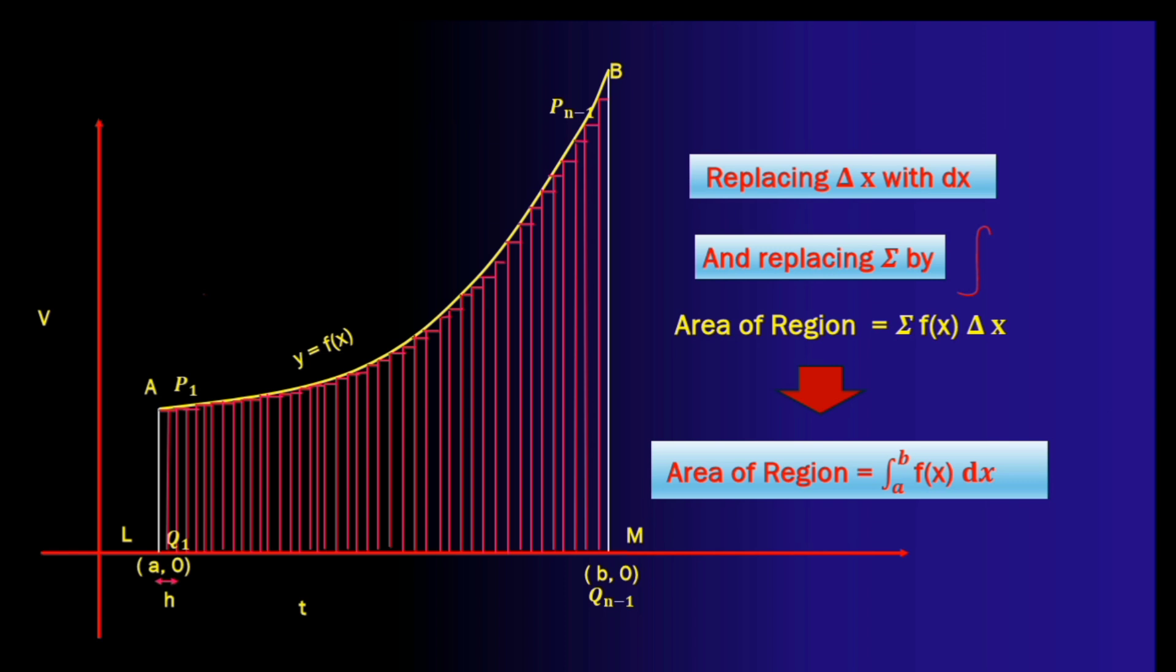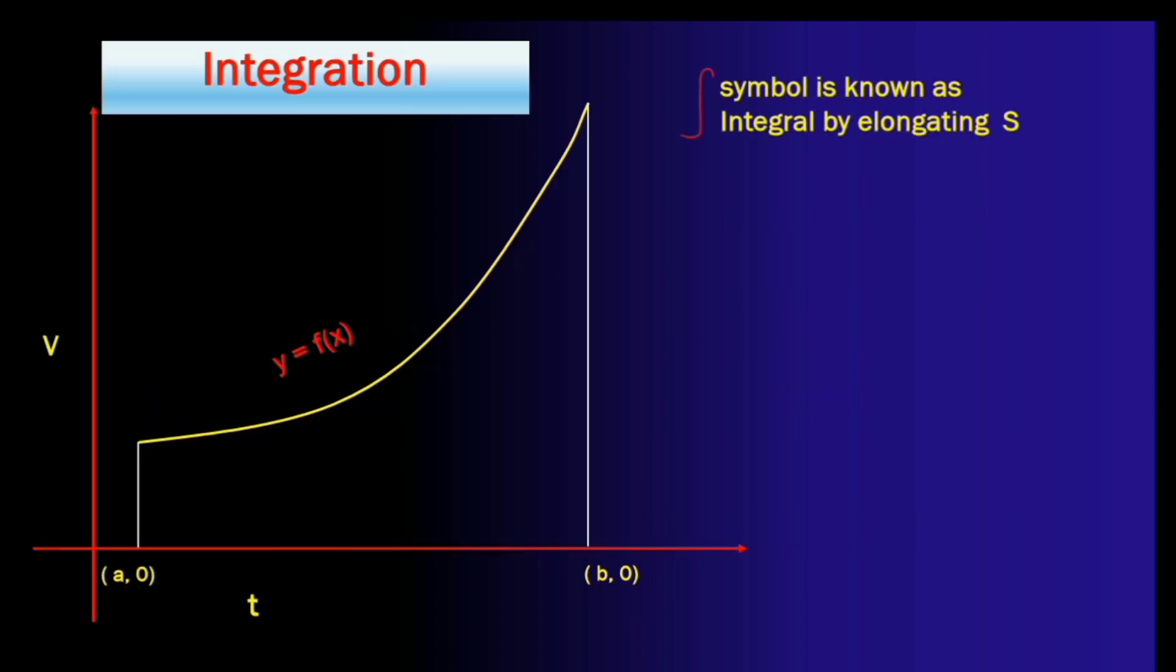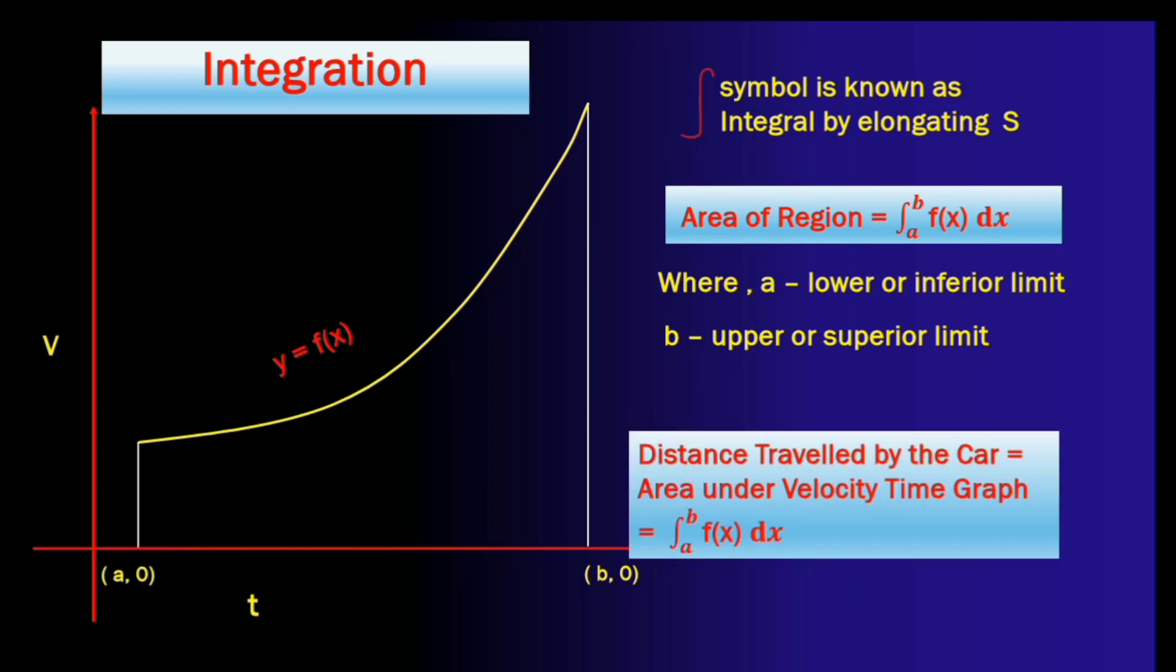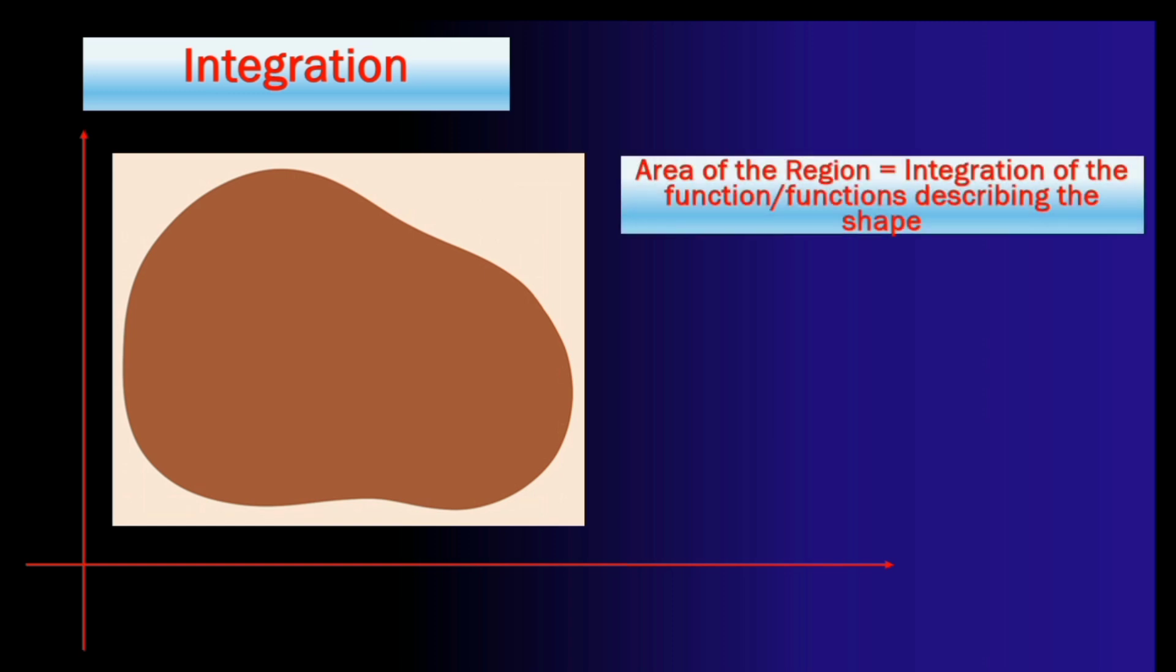So the elongated s symbol is known as integral and the area under the region of the curve which we were unable to find before can now be easily found as the integral of the curve f of x from a which is known as the lower limit till b which is known as the upper limit. Now in our example this curve was the velocity time curve so the distance traveled by the car will now be easily calculated using integration. Even the area of this irregular shape can be easily found by integrating the function or the functions that describe the shape.